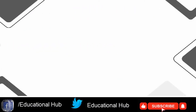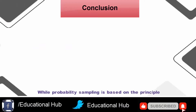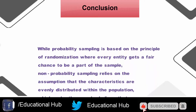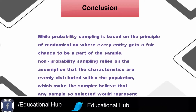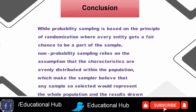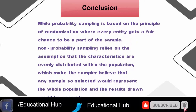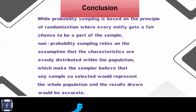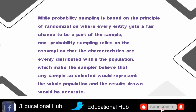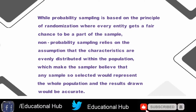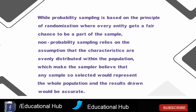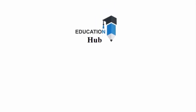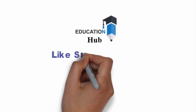Conclusion: while probability sampling is based on the principle of randomization where every entity gets a fair chance to be a part of the sample, non-probability sampling relies on the assumption that the characteristics are evenly distributed within the population, which makes the sampler believe that any sample so selected would represent the whole population and the results drawn would be accurate. Thank you for watching. Like, share, and subscribe to my channel for more informative videos about research.